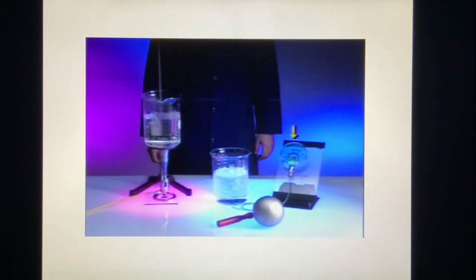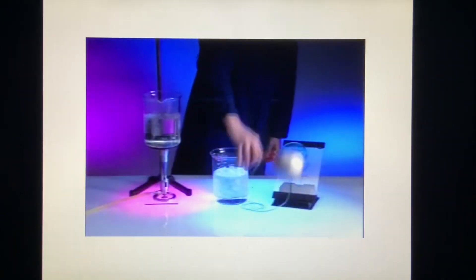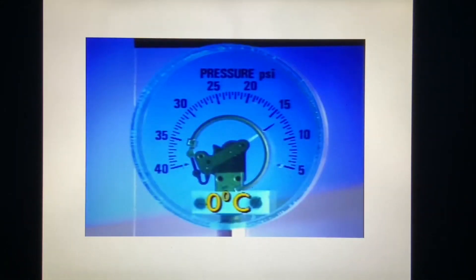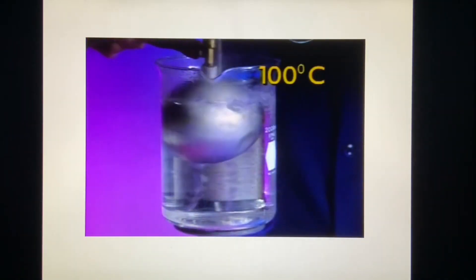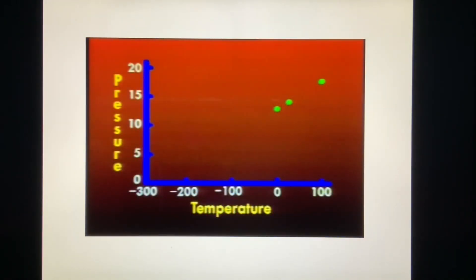We'll use this pressure gauge connected to a hollow copper sphere to demonstrate how the pressure of a gas varies with temperature. With the air in the sphere at room temperature, 21 degrees celsius, the pressure is about 14.2 pounds per square inch. When we dip the sphere in ice water to reduce its temperature to 0 degrees celsius, the pressure decreases to 13 pounds per square inch. Dipping the sphere in boiling water at 100 degrees celsius increases the pressure to 17.5 pounds per square inch. If we mark these three points on a graph of pressure versus temperature, they appear to lie in a line. Extrapolating that line backwards indicates that the pressure of the gas would reach zero at approximately minus 270 degrees centigrade.